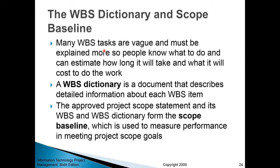Often when you create a work breakdown structure, the labels used for each task may not be clear enough for people to understand. That's why it's good practice to create a WBS dictionary — a document that describes detailed information about each WBS item. Combined with the scope statement, it forms your project definition, which also serves as a baseline against which you compare project progress.